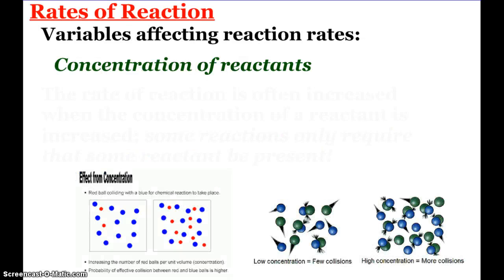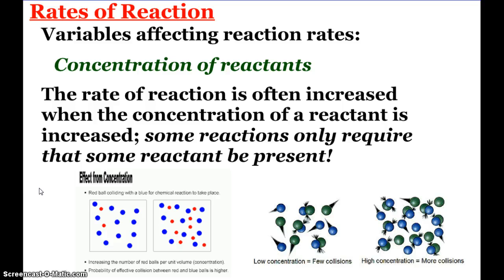First up, we're going to look at rates of reaction and the variables affecting reaction rates. The concentration of reactants has an effect. The rate of reaction is often increased when the concentration of a reactant is increased. You can see some diagrams down here. The red ball colliding with a blue ball will create a desired chemical reaction. So obviously, the more of both of those there are, the more likely product is going to be formed. This has to do with what we're going to study later called the collision theory.